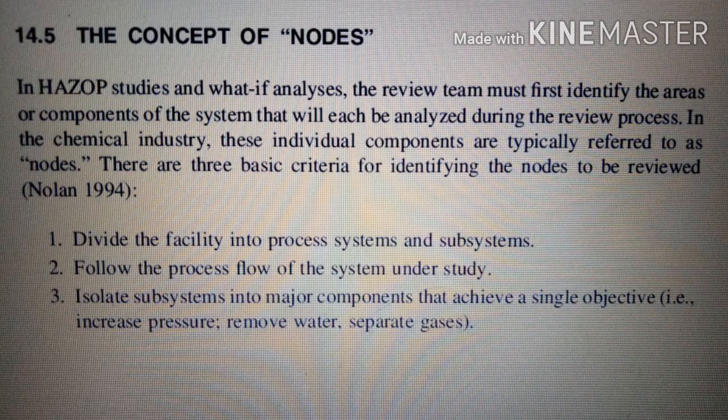Using these criteria, individual nodes associated with a vapor degreaser system can be identified across different steps including compressors, refrigerant storage tanks, cooling coils, solvent storage tanks, overhead bridge, and electrical services. Once the individual nodes have been identified, the HAZOP study and What-If Analysis can be initiated. The information developed through the What-If Analysis can then be used as input data for a more complete and detailed HAZOP study of the vapor degreasing system.